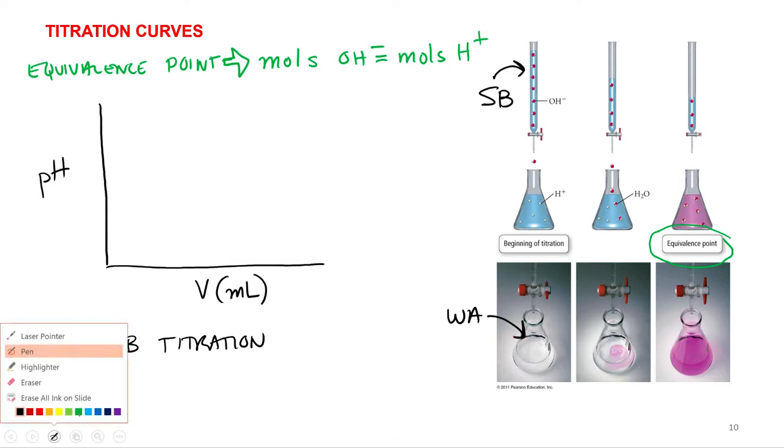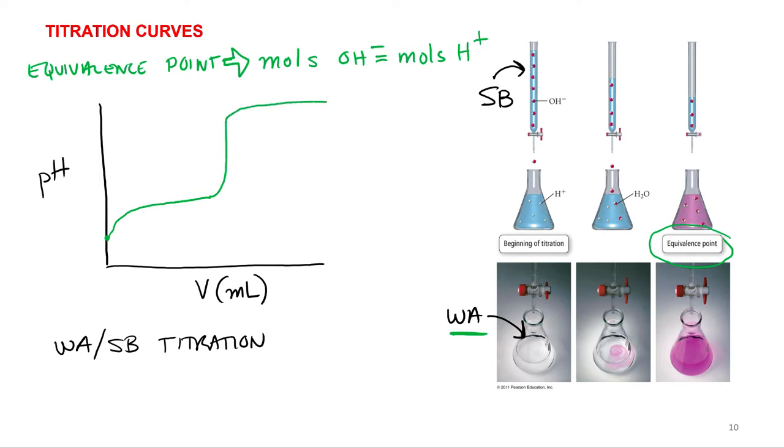But if we're doing a weak acid, strong base titration, here's what the general curve looks like. First, the pH is going to be low because we've got weak acid in our sample, so we'll start out maybe around here depending on the concentration, depending on how strong the acid is. Then the pH is going to start to go up because we're adding hydroxide, neutralizing our weak acid in the sample. And then it's going to shoot up really fast, and then it will level off again. So that's the general shape of a titration curve for a weak acid, strong base titration.